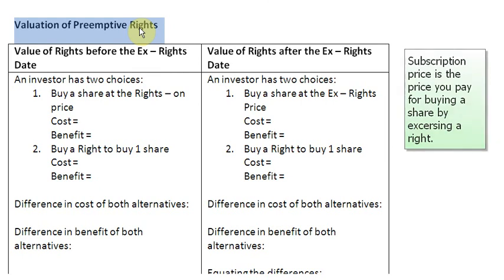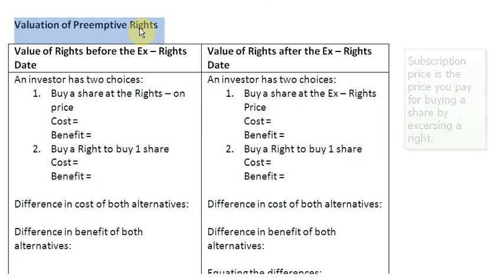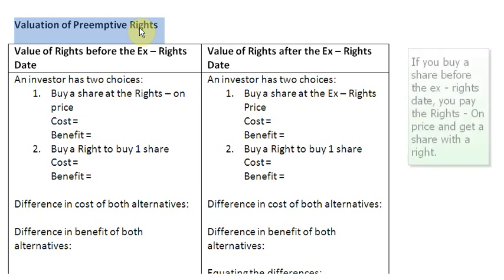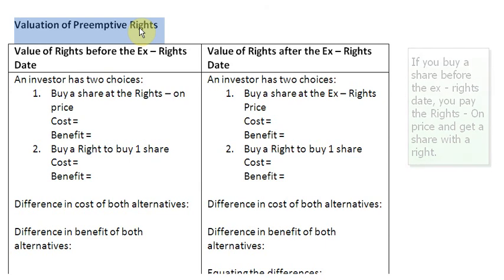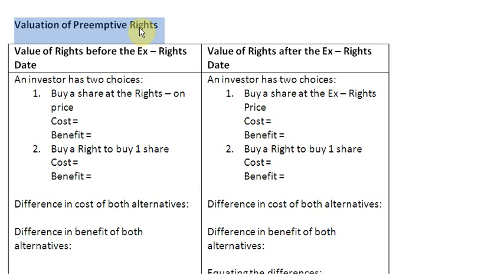The third thing we need to remember is that whenever a share is bought before the X-rights date, it gives you one share along with a right, and the price you pay for it is known as the rights-on price. If you buy a share after the X-rights date, you buy the share at the X-rights price and that gives you only one share — it will not give you any right.